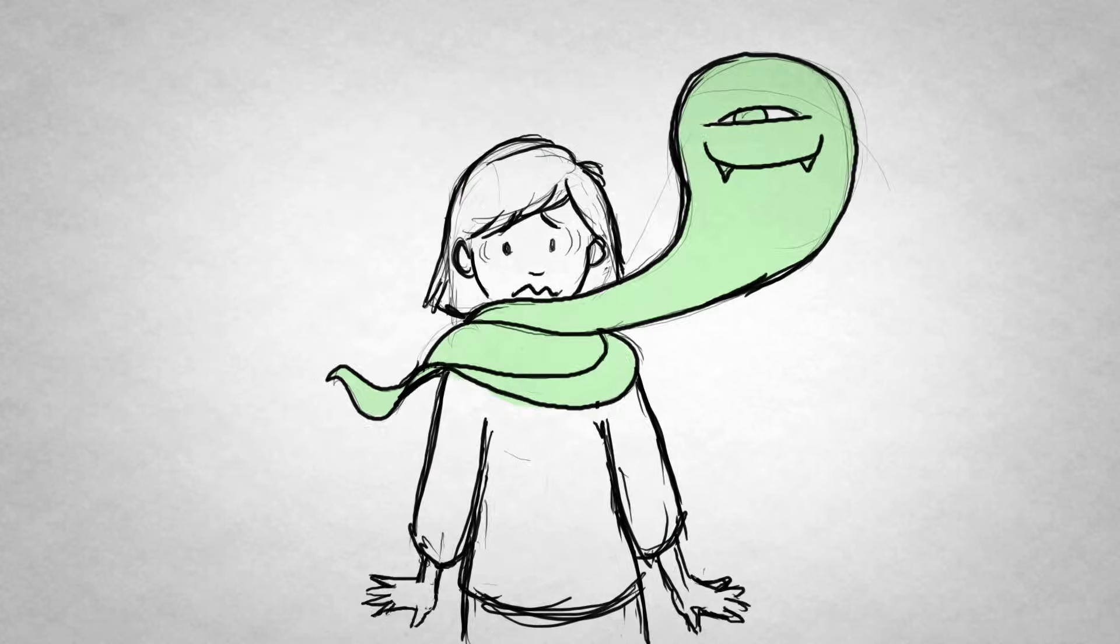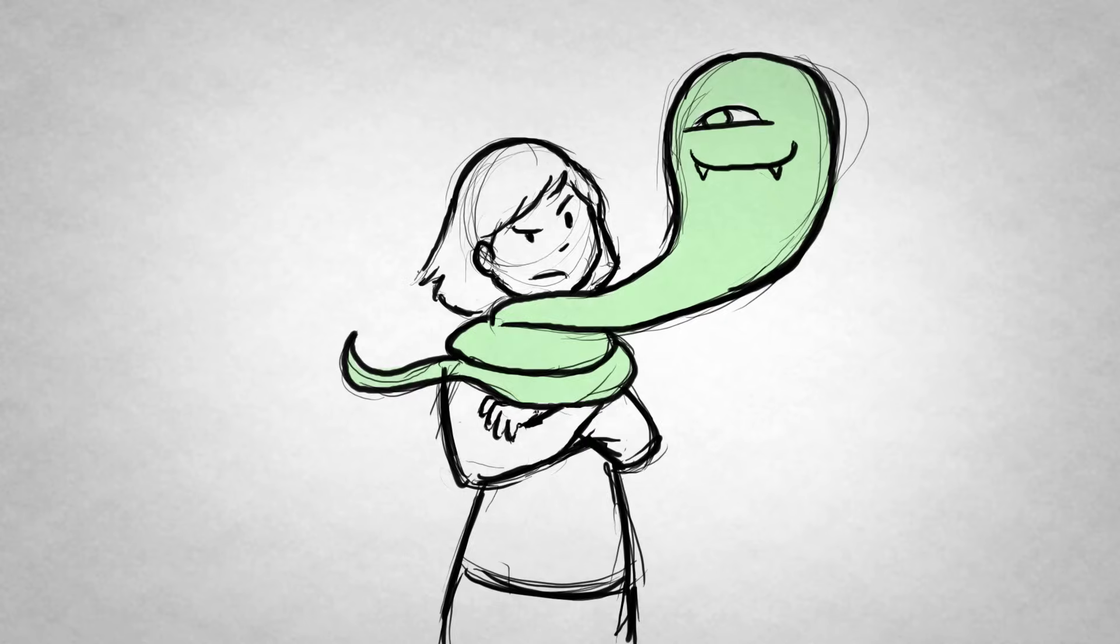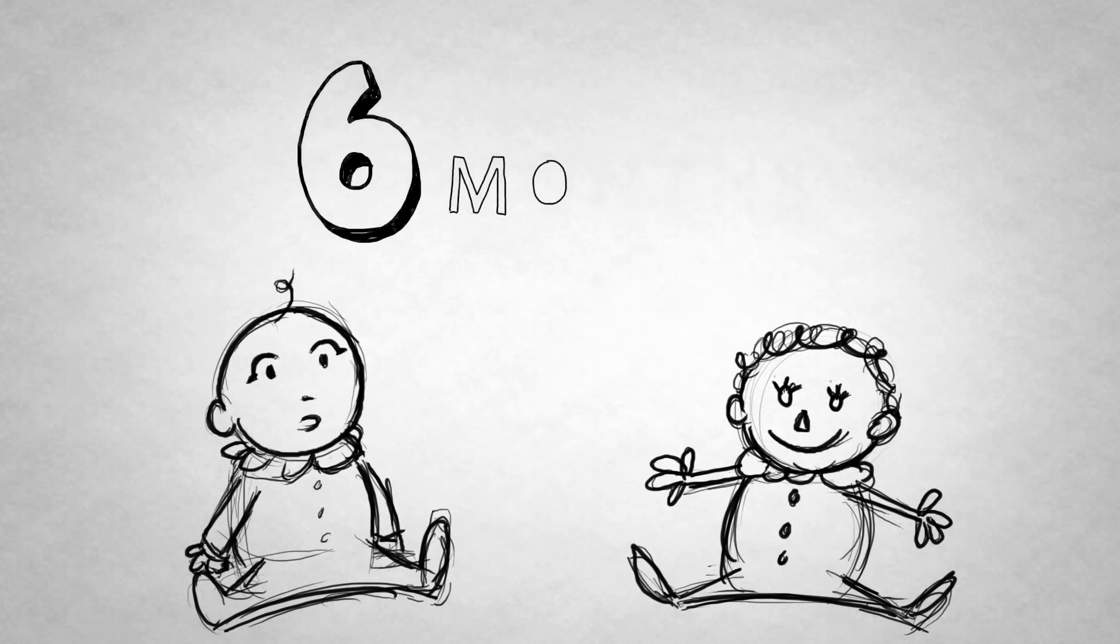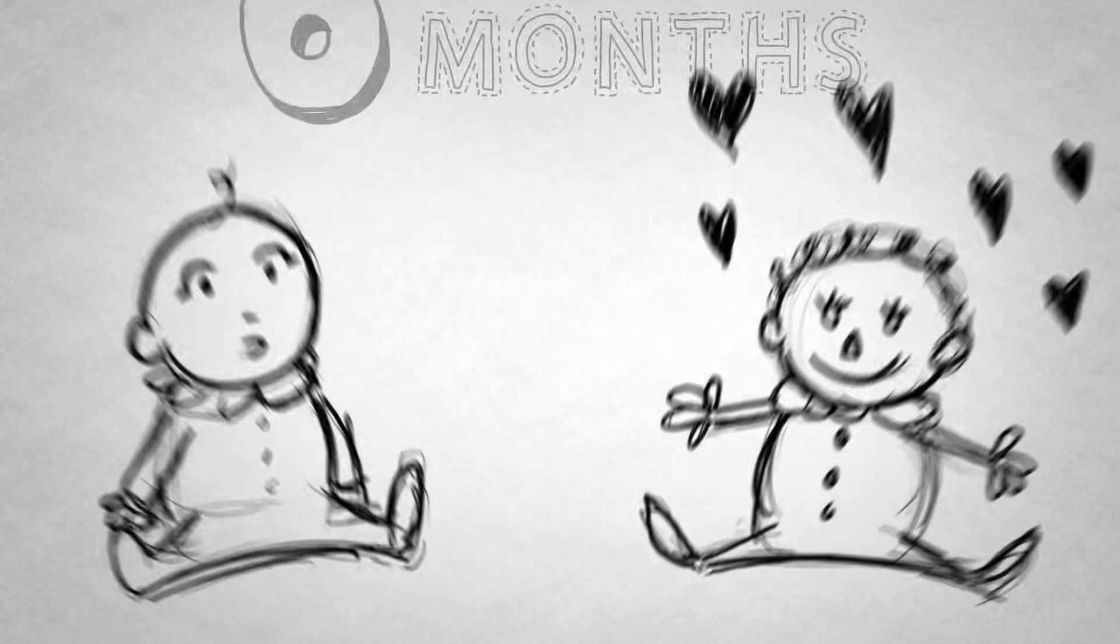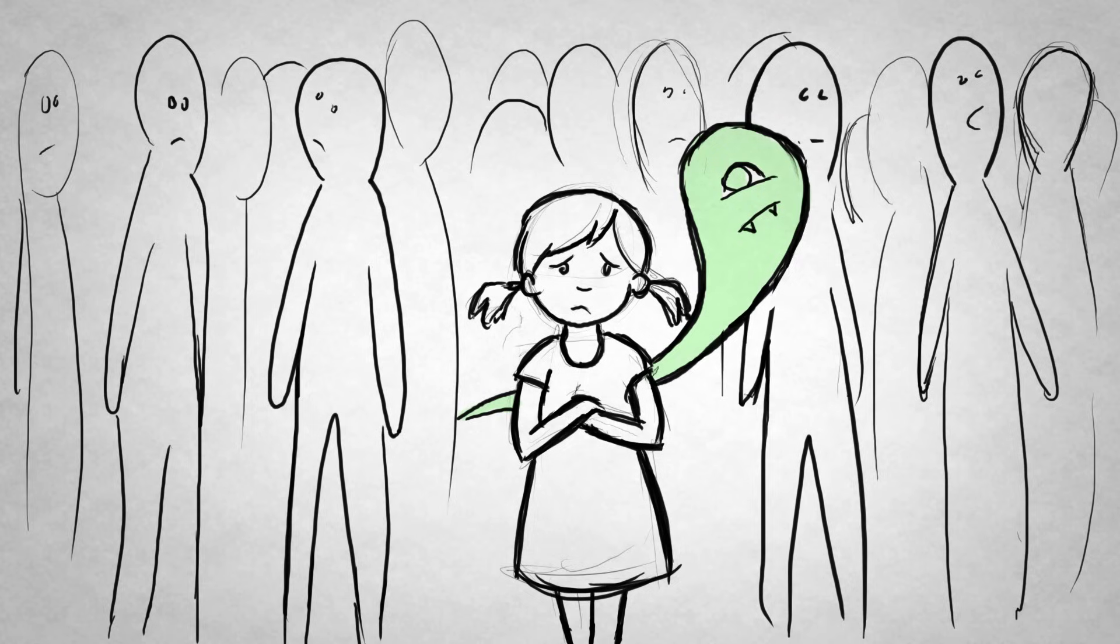I know you've felt that vice-like grip of the green-eyed monster because you're not alone. It happens to everyone. Studies show that children as young as six months grimace when their mothers interact with a dummy baby. It's pretty much the occupational hazard of belonging to the human race. We want to be loved and we do not want to be ignored.